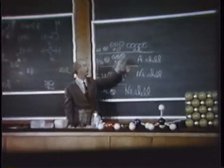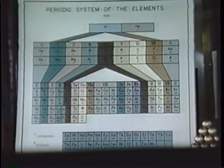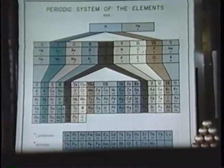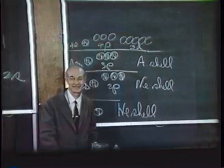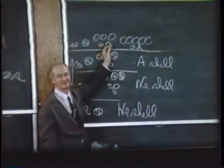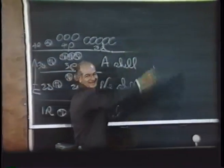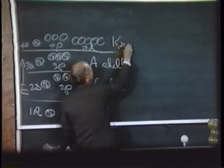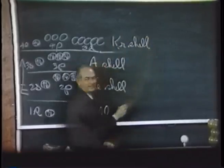Here we have the first long period of 18 elements: potassium, calcium, scandium, titanium, vanadium, chromium, manganese, iron, cobalt, nickel, copper, zinc, gallium, germanium, arsenic, selenium, bromine, and krypton. This ends up with krypton, and we call it the krypton shell of 18 elements.